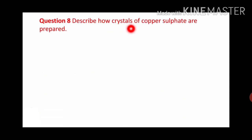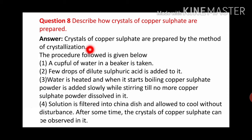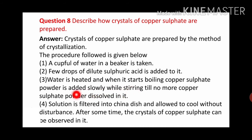Next one: describe how crystals of copper sulfate are prepared. Answer: crystals of copper sulfate are prepared by the method of crystallization. A cup full of water in a beaker is taken and a few drops of dilute sulfuric acid are added. Water is heated and when it starts boiling, copper sulfate powder is added slowly while stirring, until no more copper sulfate powder dissolves. The solution is filtered into a china dish and allowed to cool without disturbance. After some time, crystals of copper sulfate can be observed.